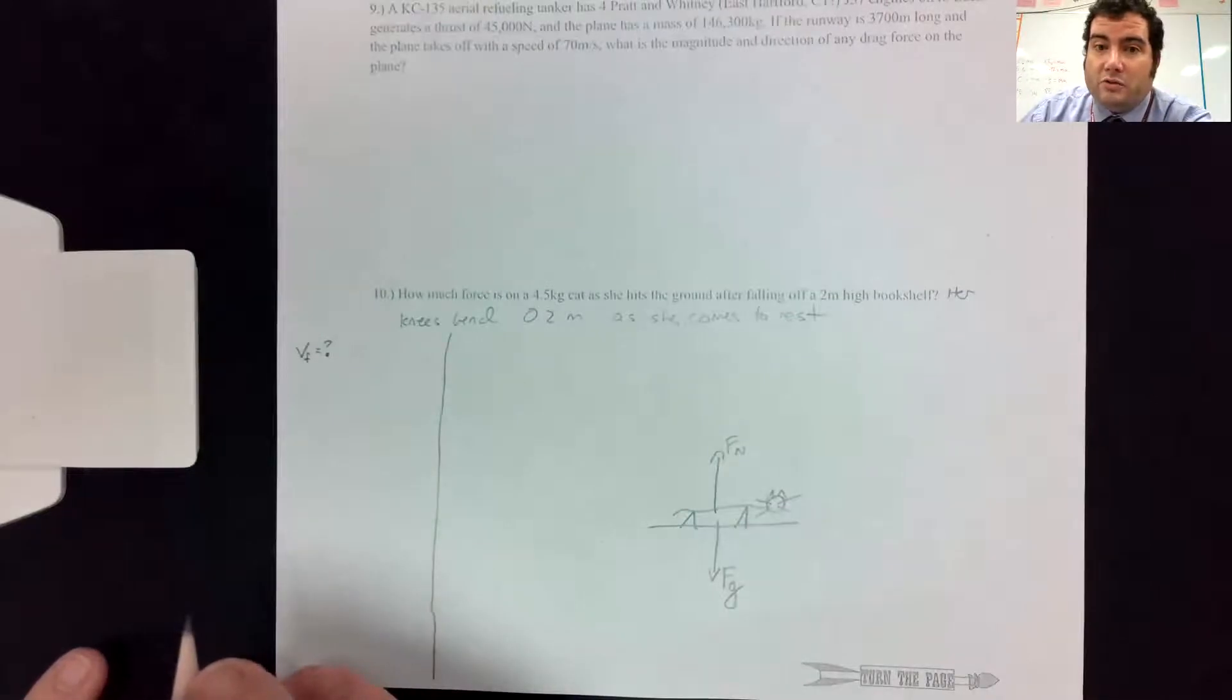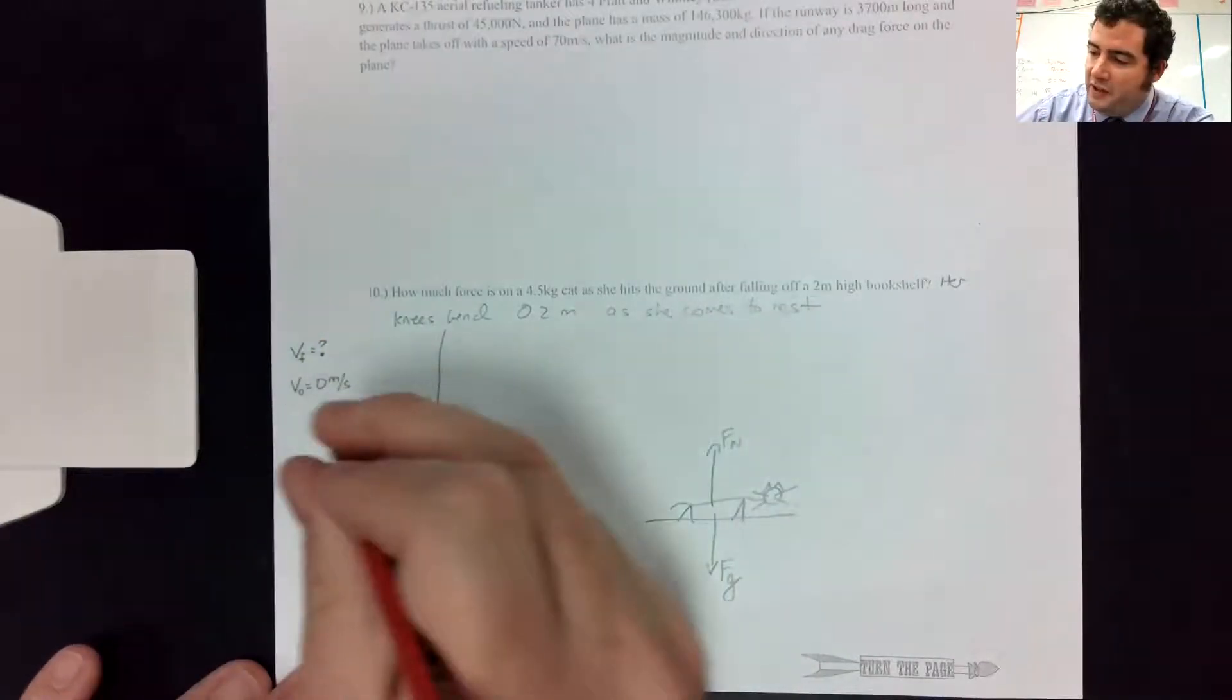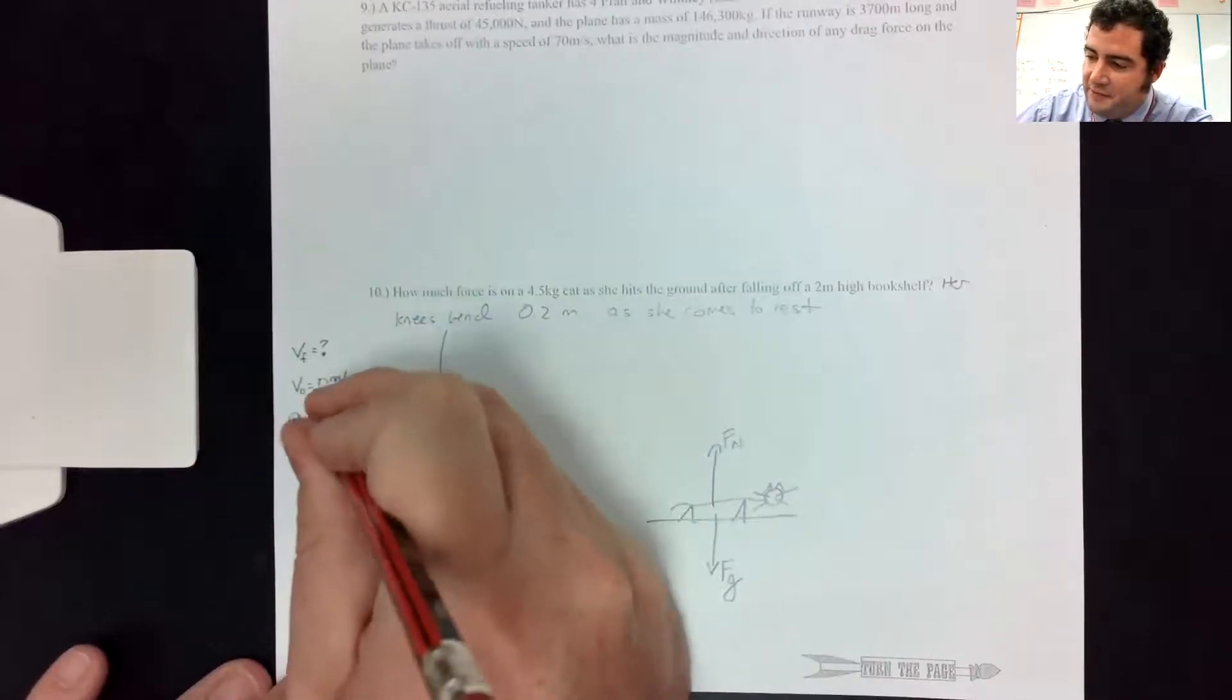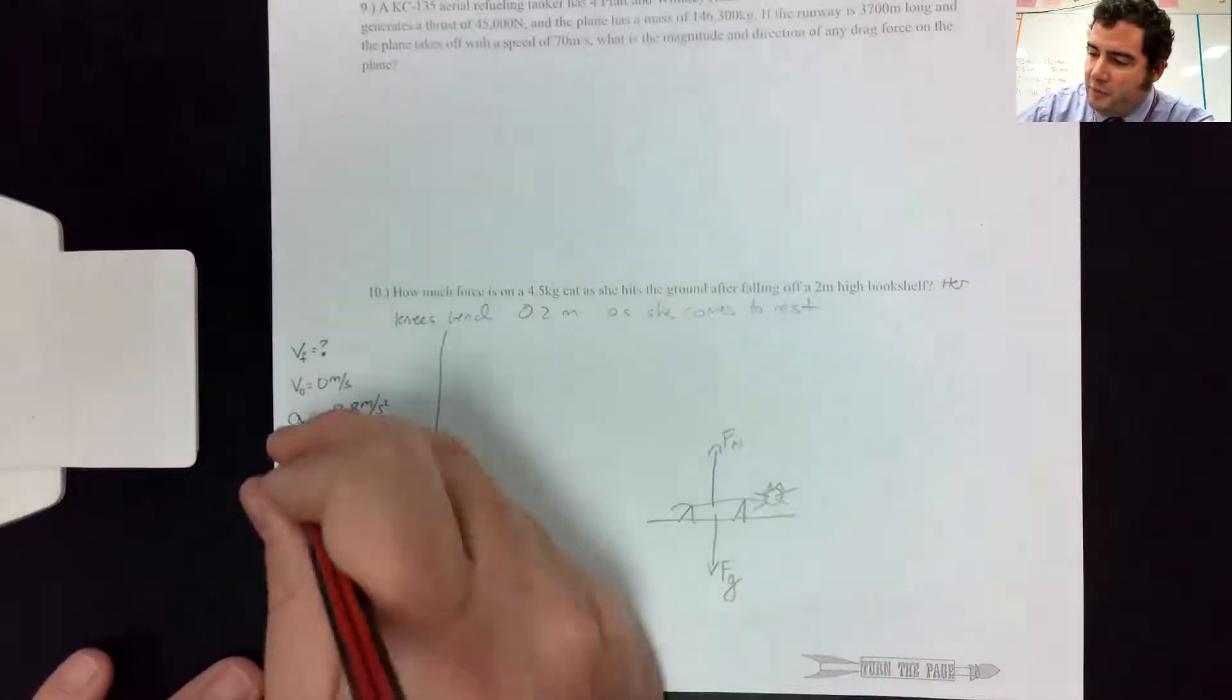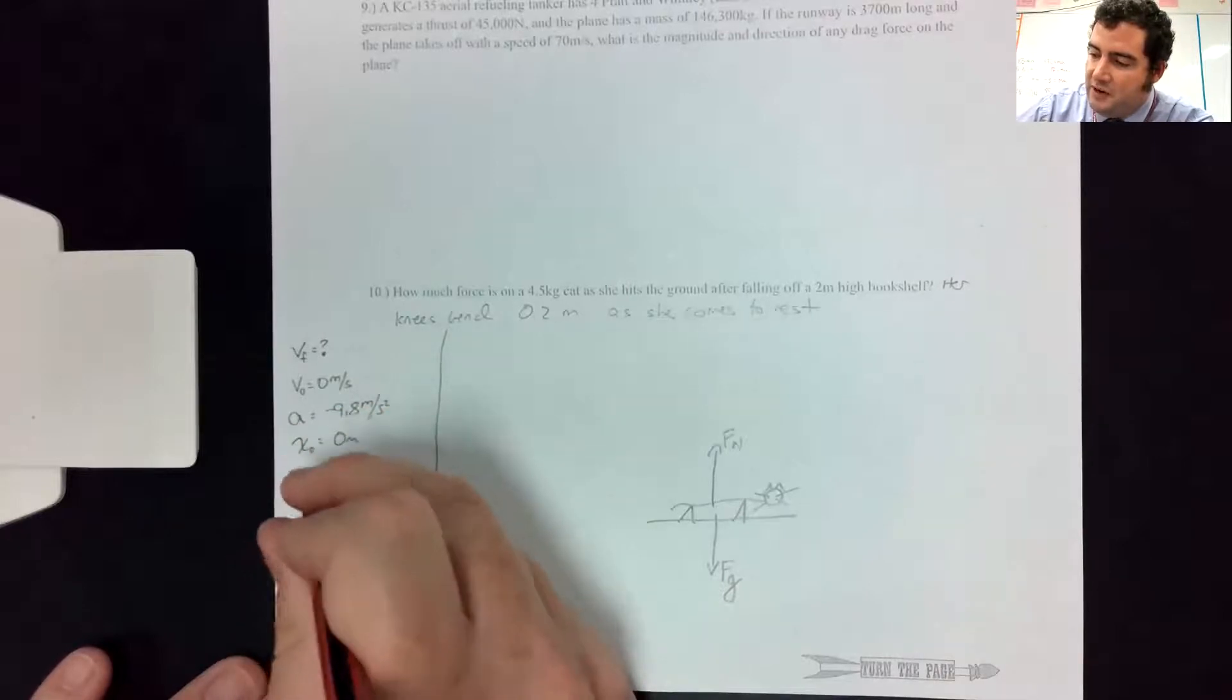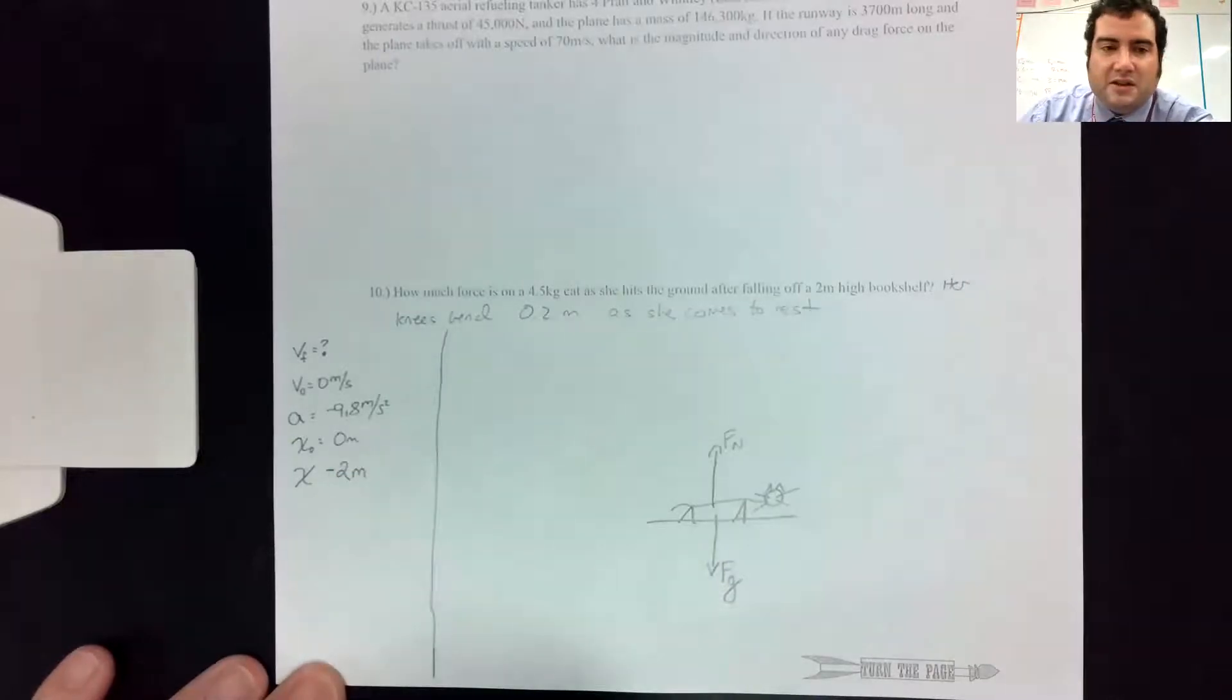So what do we know? It said she fell, so we're going to say V0 is zero. We know she's falling through the air, so the only force on her during this time period is gravity. So her acceleration is 9.8 meters per second squared down. She's falling off a bookshelf. We'll say she starts at position zero. And we'll say her final position when she hits the ground is minus two meters because it's been in the downward direction.